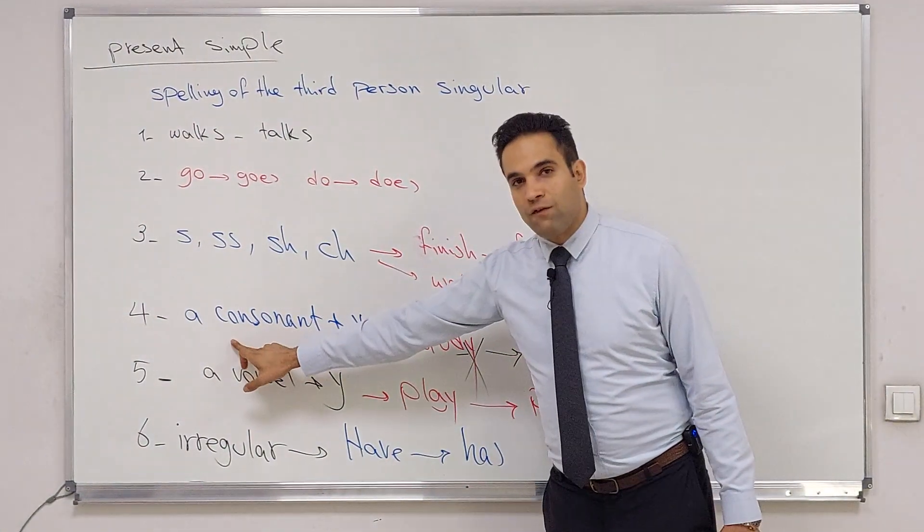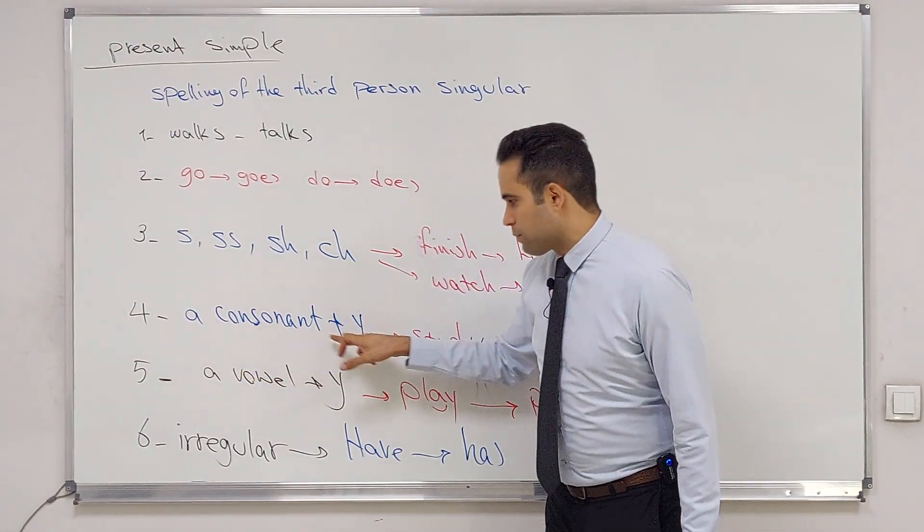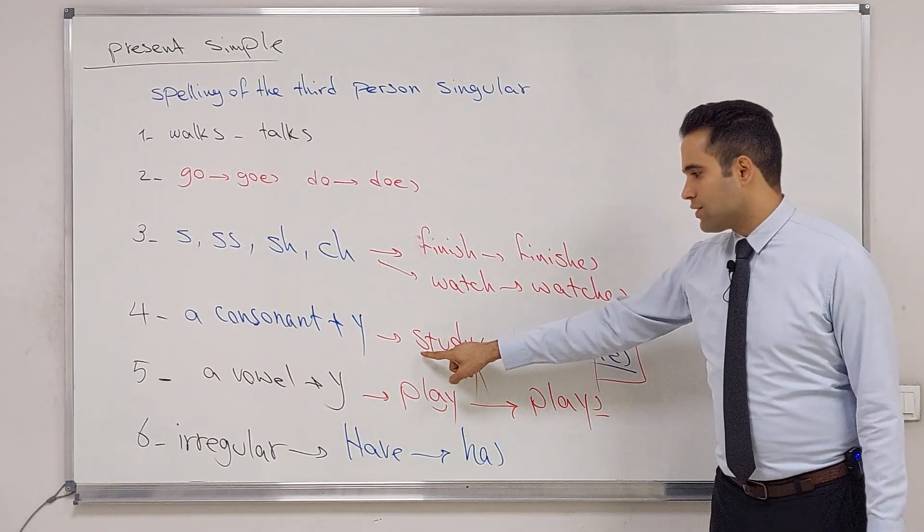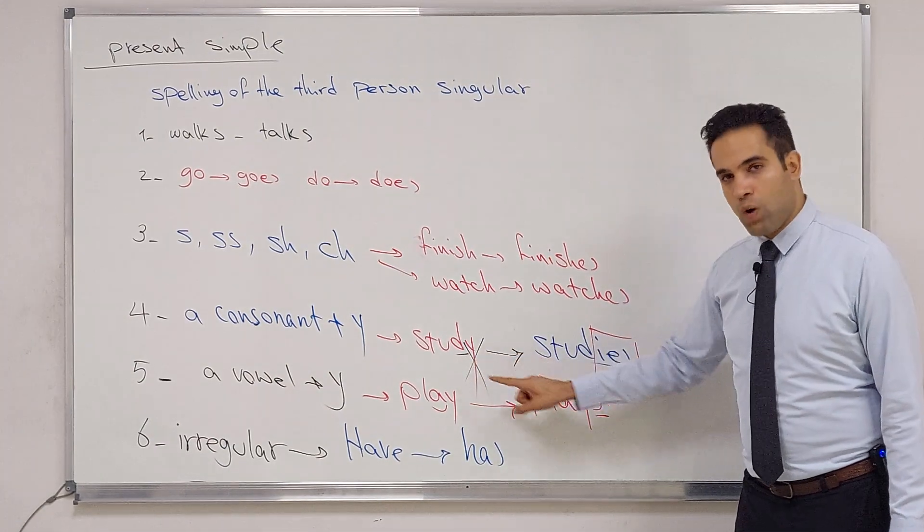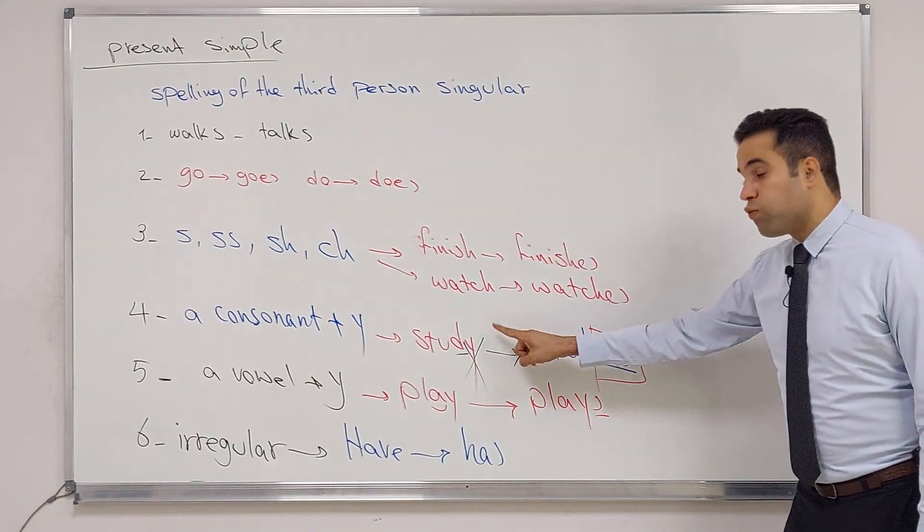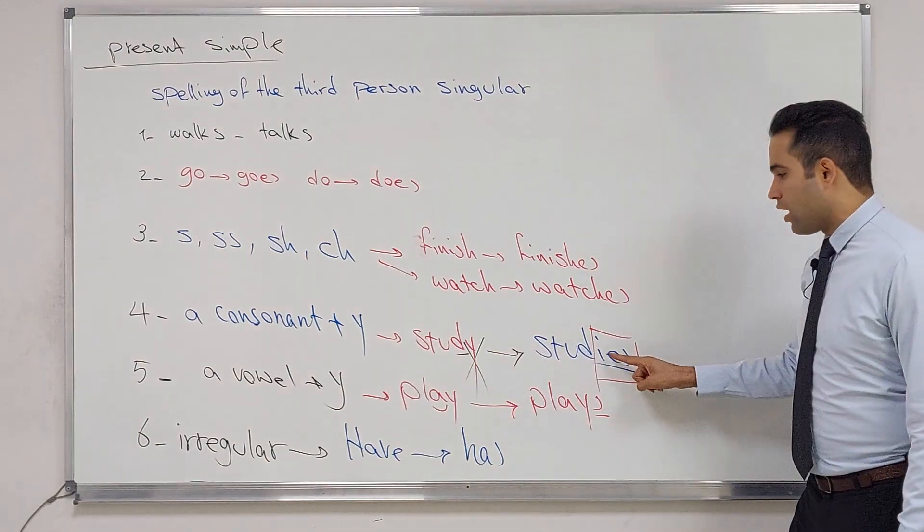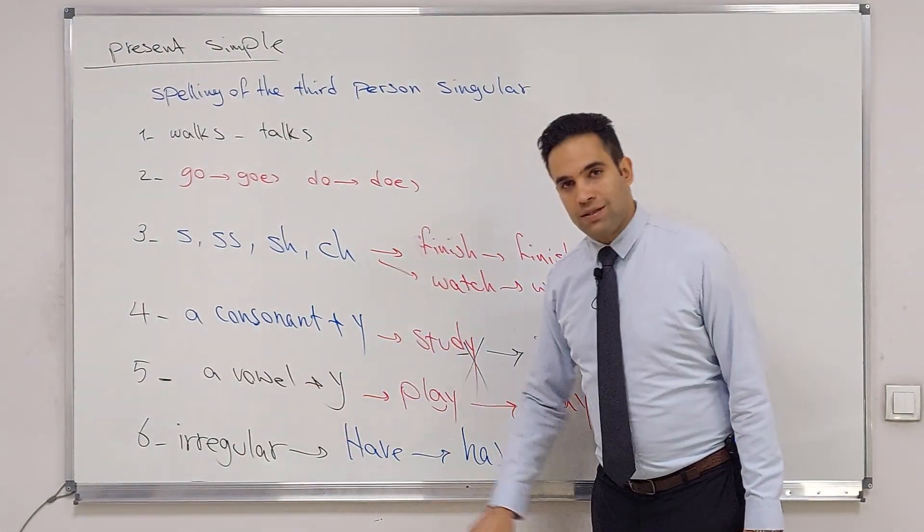Number four: if the verb ends in a consonant plus y - a consonant like study - we omit the y and we add i-e-s. Number five: a vowel plus y.